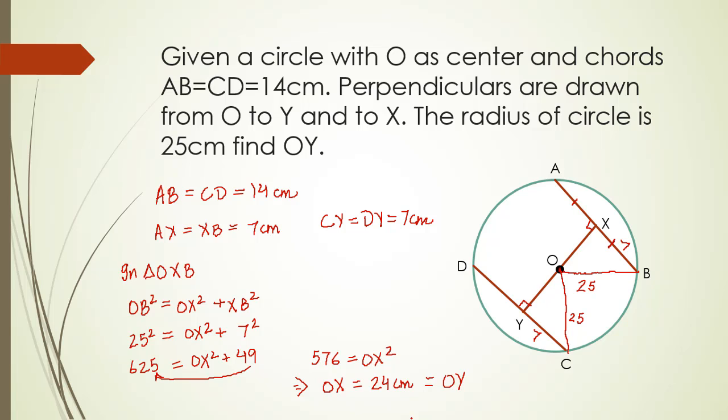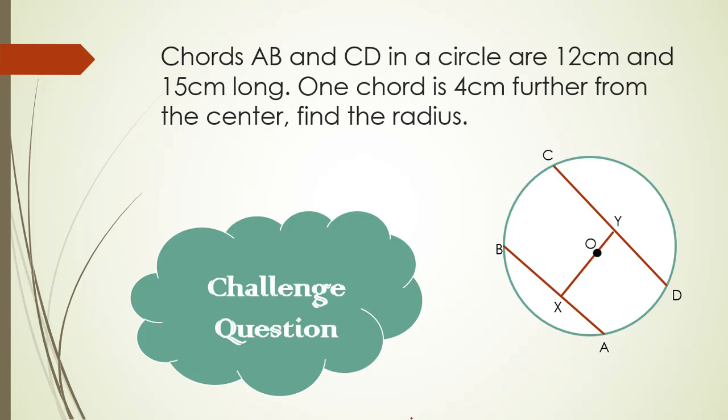So I have a challenge question for you which you can try on your own. And I will give you the solution to this challenge question in my next video. So this is the question: Chords AB and CD in a circle are 12 cm and 15 cm long. One chord is 4 cm further away from the center. You have to find the radius. So here you can see the two chords are not quite equal, so you will have to use a variable x to show their distance from the center. This is a little hint that I wanted to give you now. You will find the solution to this problem in my next video.